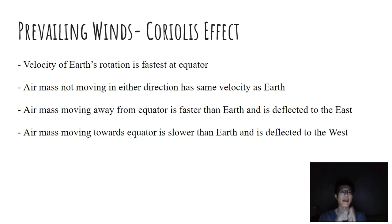If the air mass is moving away from the equator it is actually moving faster than earth and is deflected to the east. If the air mass is moving toward the equator it is slower than the earth underneath it and is deflected to the west. This is very confusing. If you want to learn the physics behind it great, otherwise just memorize it.